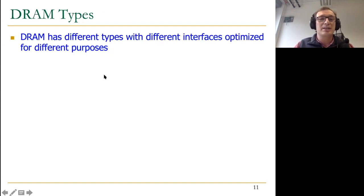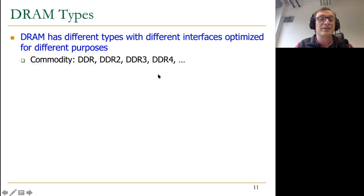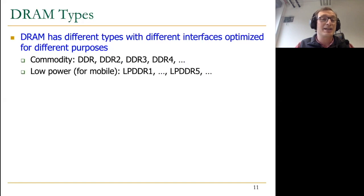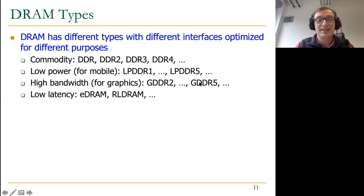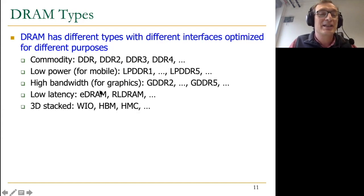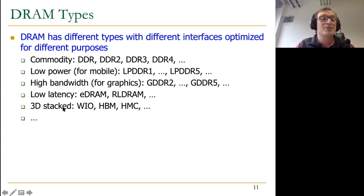DRAM has different types with interfaces optimized for different purposes: DDR interfaces for commodity use, low-power interfaces for mobile processors, high-bandwidth DRAM for graphics with the GDDR designation, low-latency DRAM which is very high cost, and 3D stacked DRAMs. The underlying microarchitecture of DRAM is fundamentally the same across these types; what differs is the interface, protocols, timing parameters, number of banks, and whether they're 3D stacked.